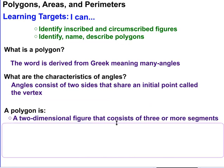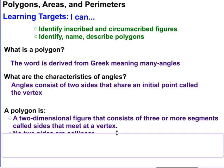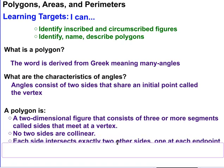So a polygon is a two-dimensional figure that consists of three or more segments, and those segments are called the sides, and they meet at a vertex. No two sides are collinear, and each side intersects exactly two other sides, one at each end point.